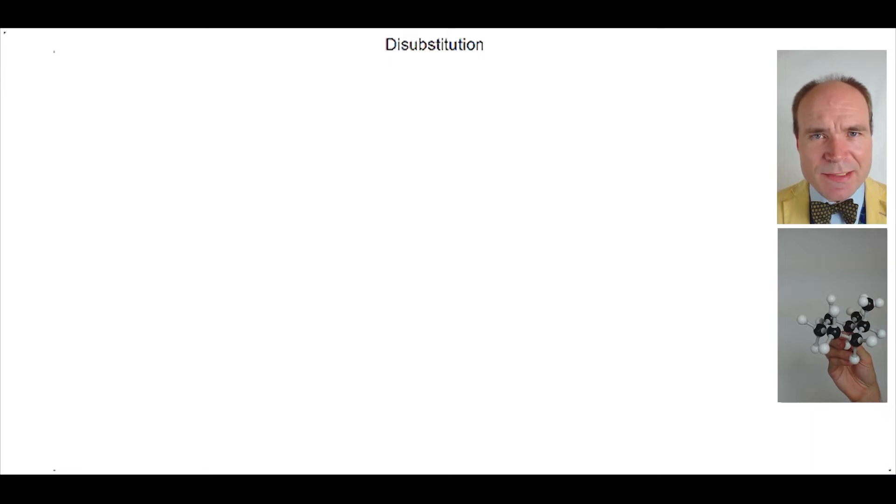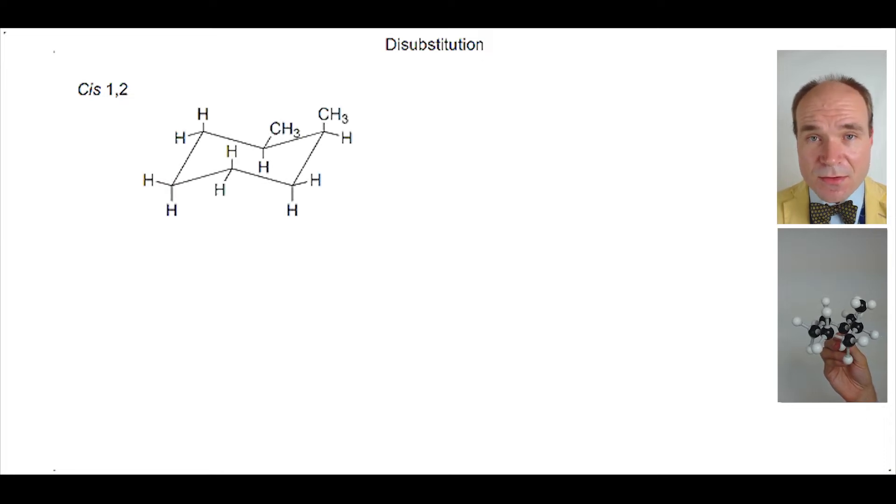We're going to start by looking at cis 1-2. The 1-2 tells us that the methyl groups are attached to carbons one and two of the ring. Cis tells us that the methyl groups lie both on the same side of the ring, so if we draw a dotted horizontal line through a ring carbon both methyl groups will either lie above the line or both methyl groups will lie below the line.